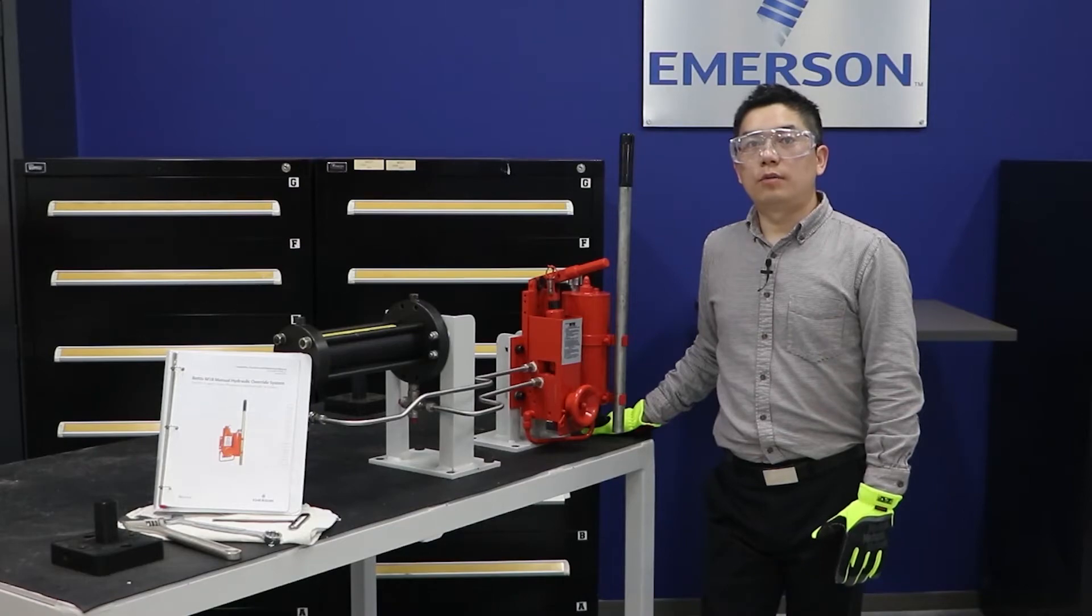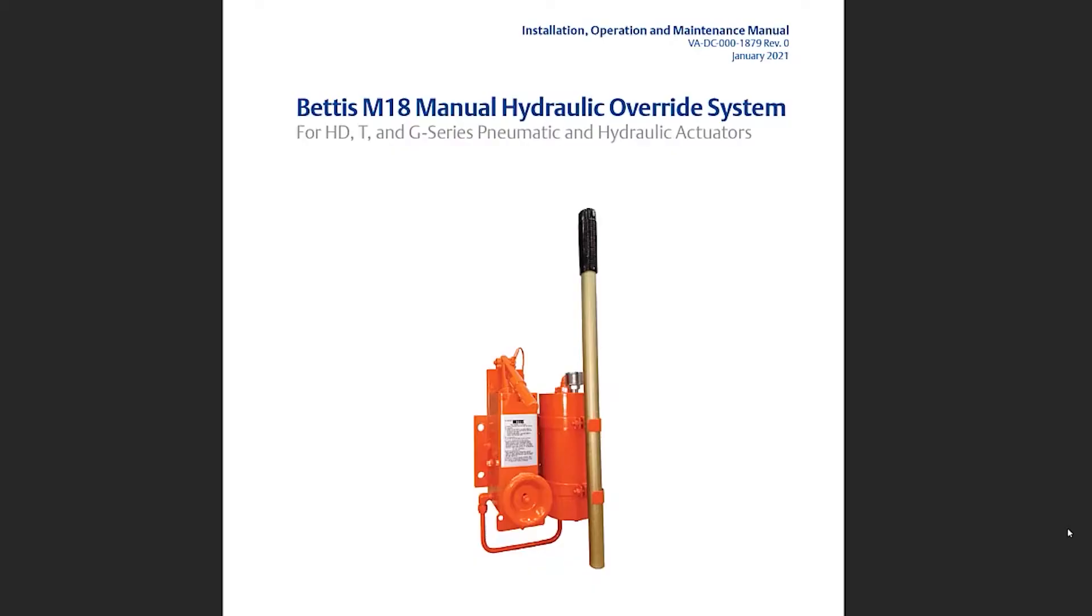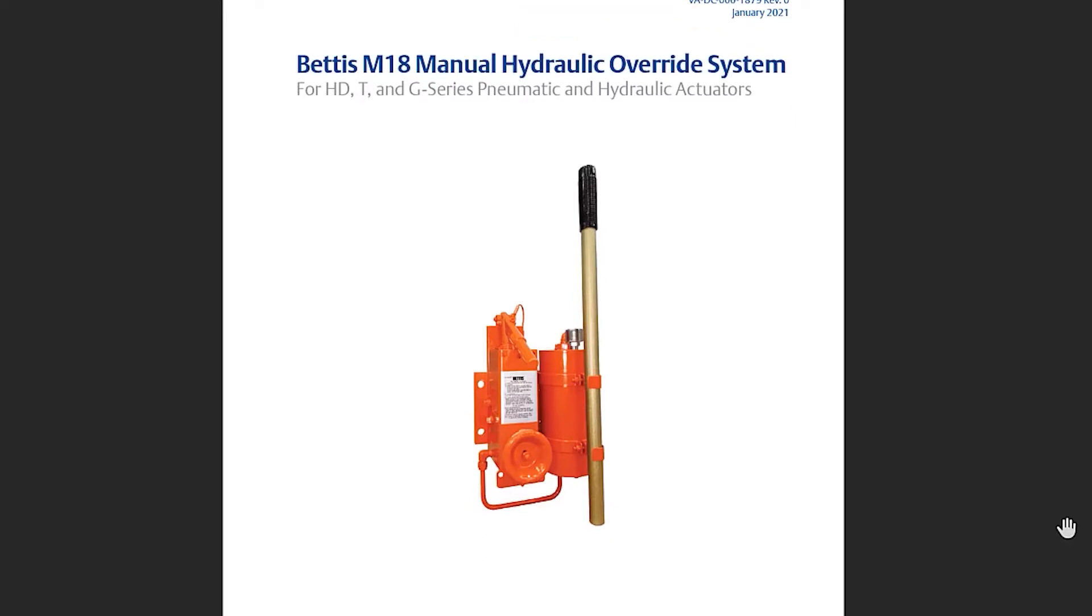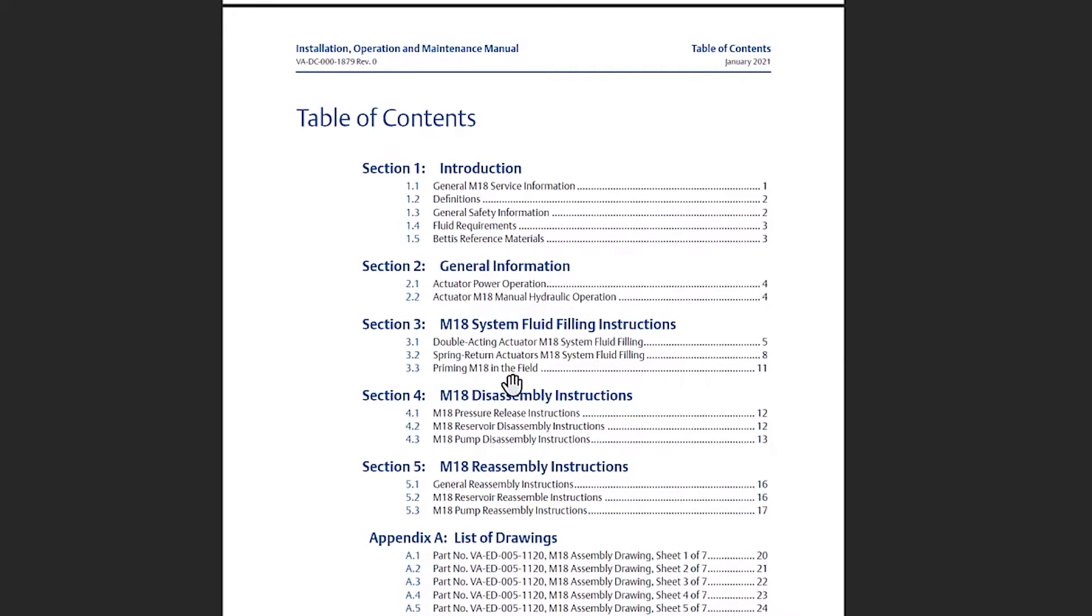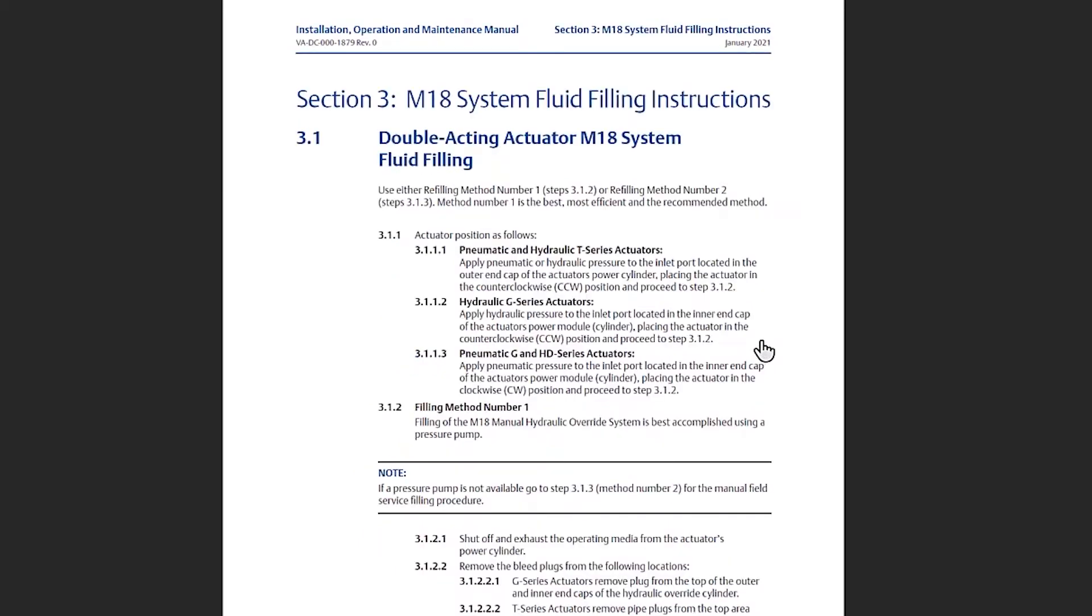Before we start the pump priming procedure, make sure the hydraulic override system has the correct connection according to the system diagram, and the fluid filled following the instruction 3.1 or 3.2 listed in the IOM of the M18 system.